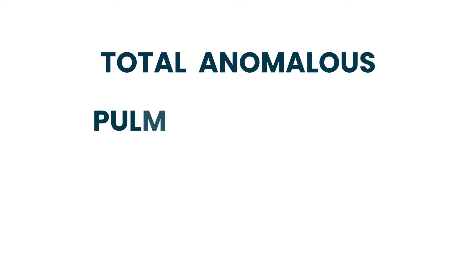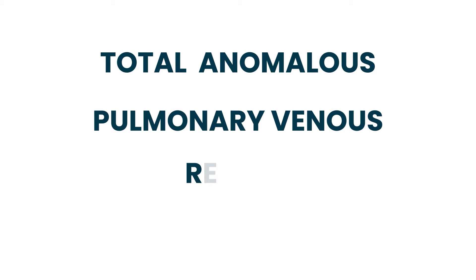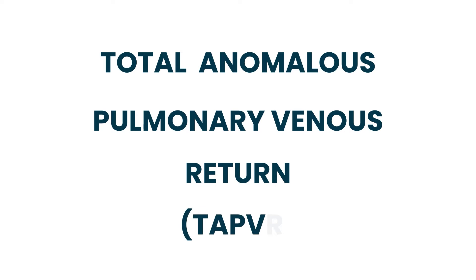Total anomalous pulmonary venous return, abbreviated TAPVR. The best way to explain this is to draw a diagram of the heart and show exactly what's going on in this congenital heart defect.